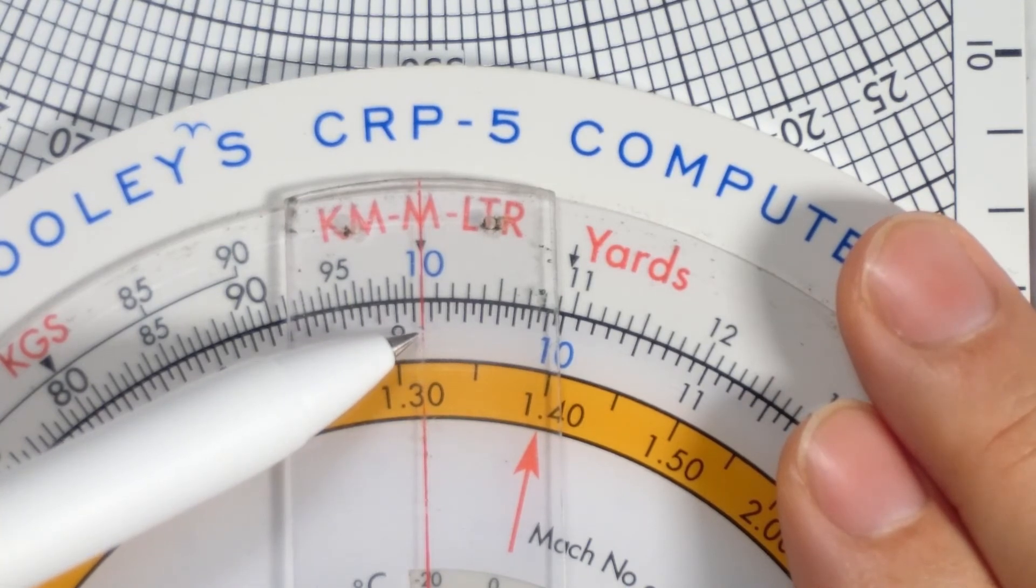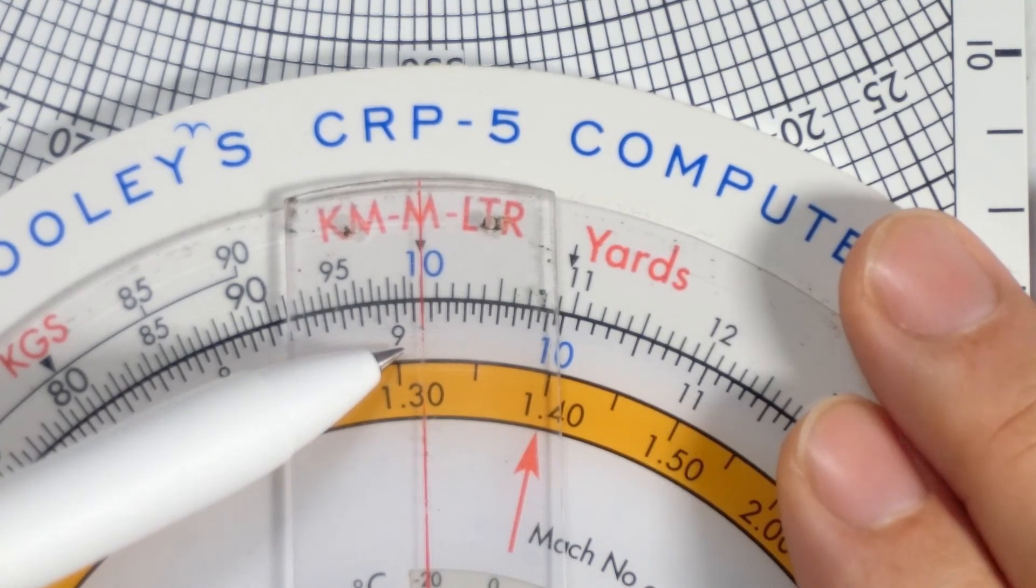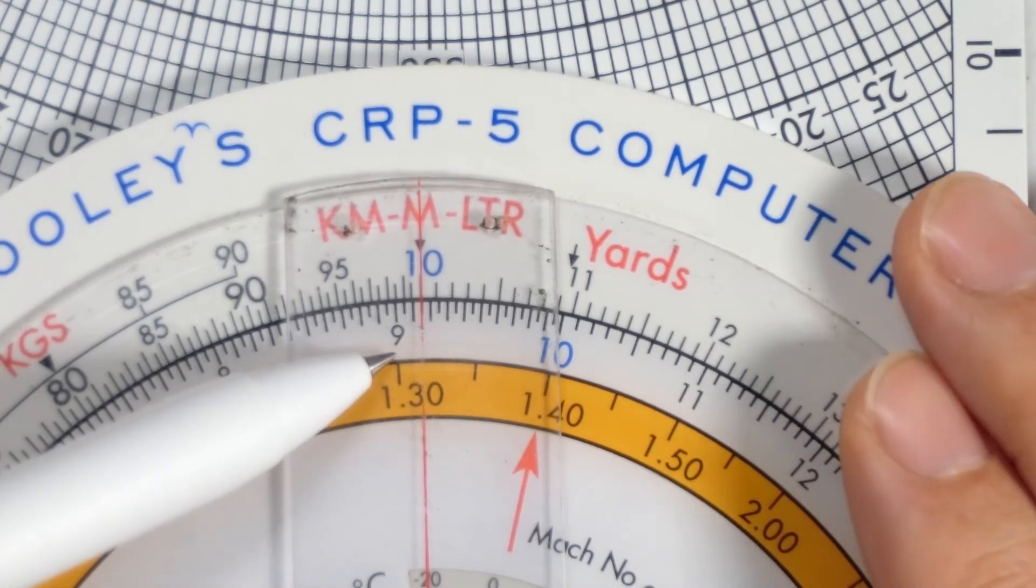So 30,000 feet would be equivalent to 9,150 meters. Now there might be some rounding error, but if we were to take a calculator out and use the exact conversion, we shouldn't be more than 4 or 5 units off.